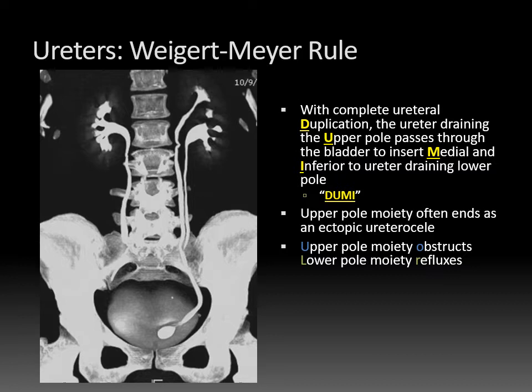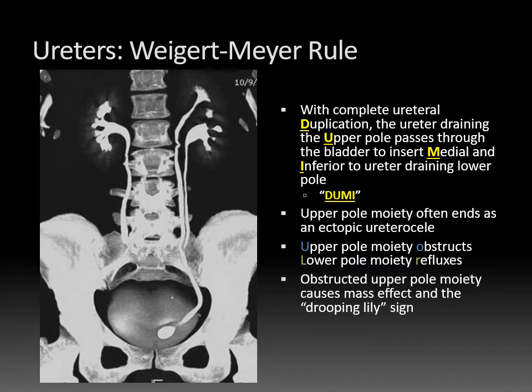There is some overlap with that, but it's a general rule. When the upper pole obstructs, it can exert mass effect against the lower pole moiety and displace it, causing the drooping lily sign. That's more of an older intravenous pyelography sign, because on an IVP you would only see excreted contrast within the displaced lower pole moiety. On a CT urogram, though, even if the upper pole doesn't excrete contrast, you would still identify it on other sequences.